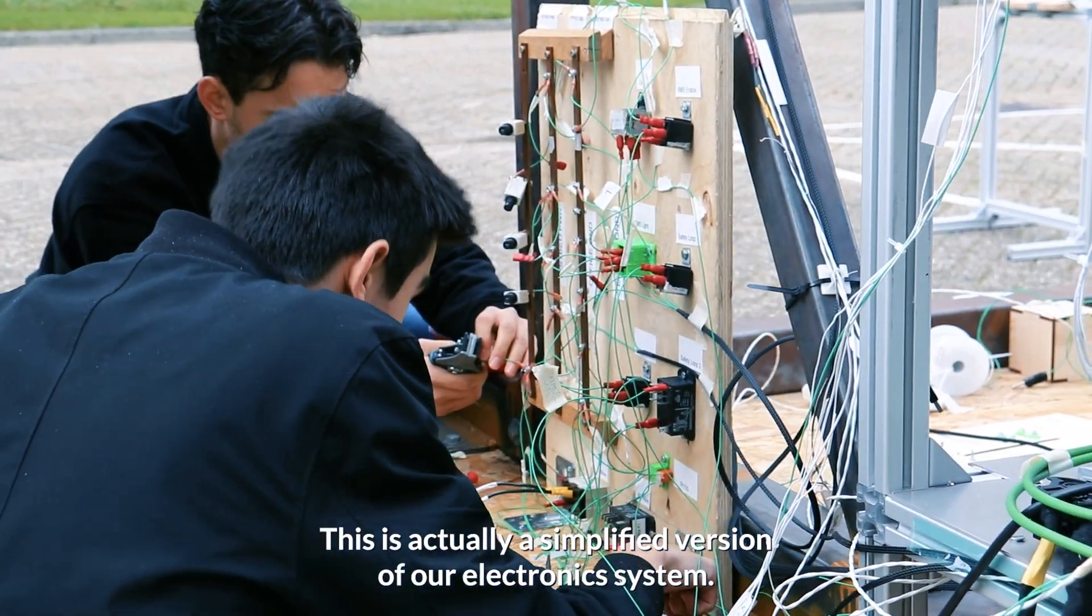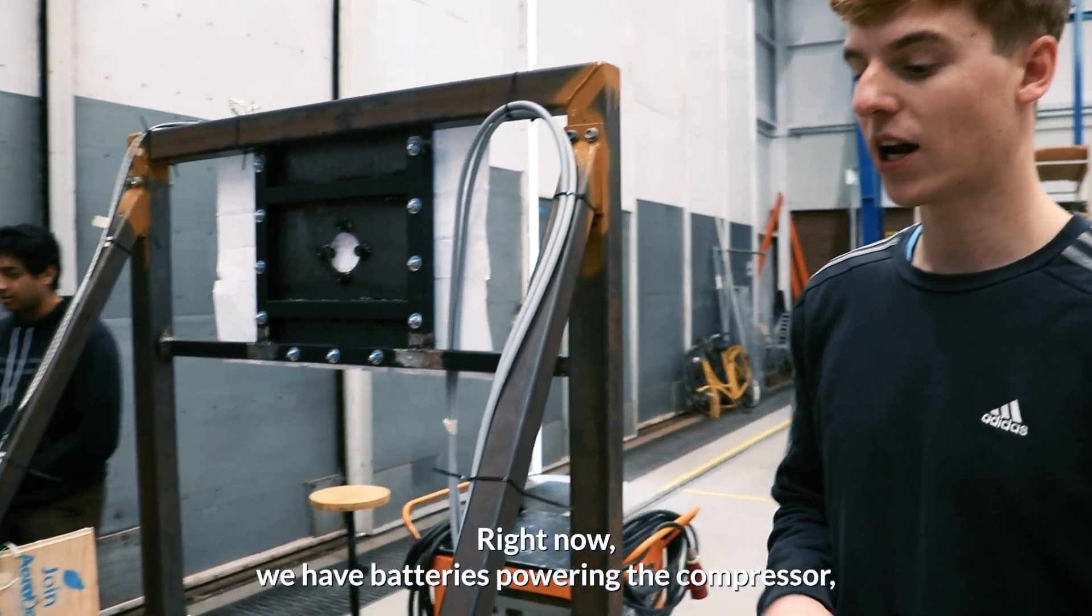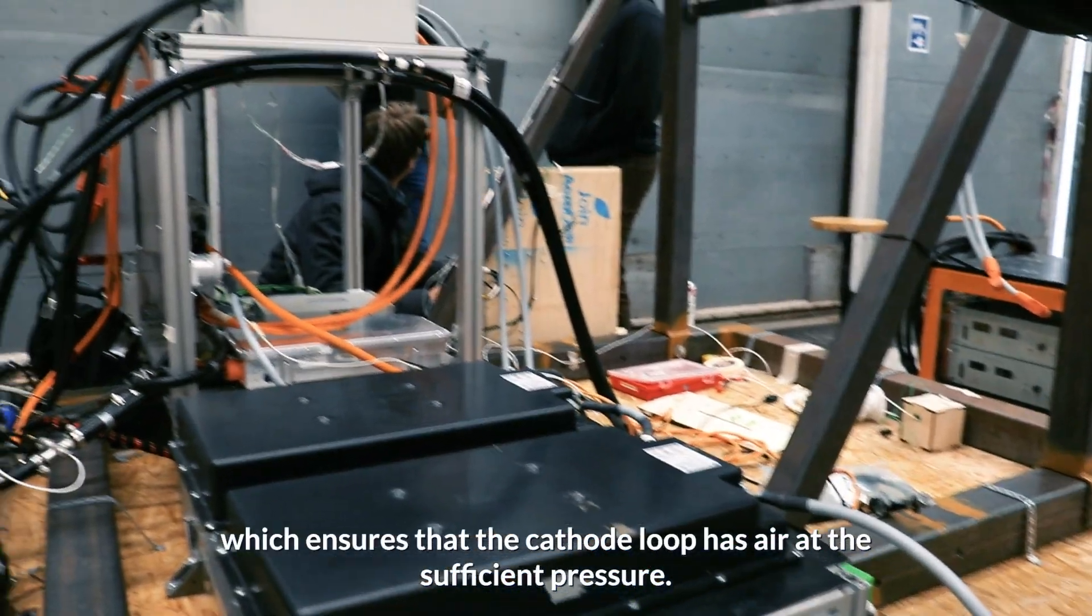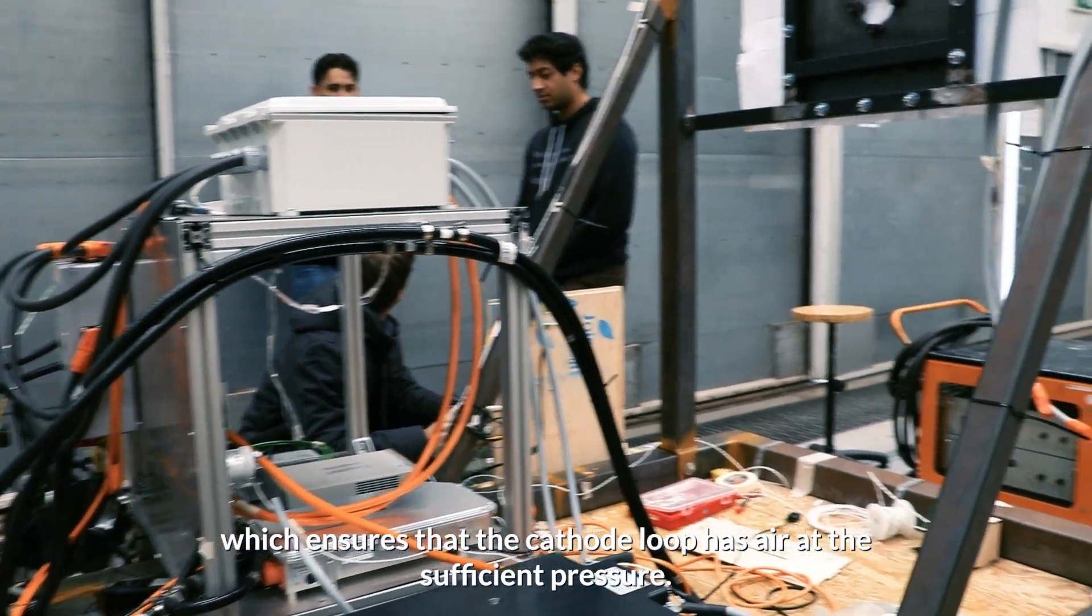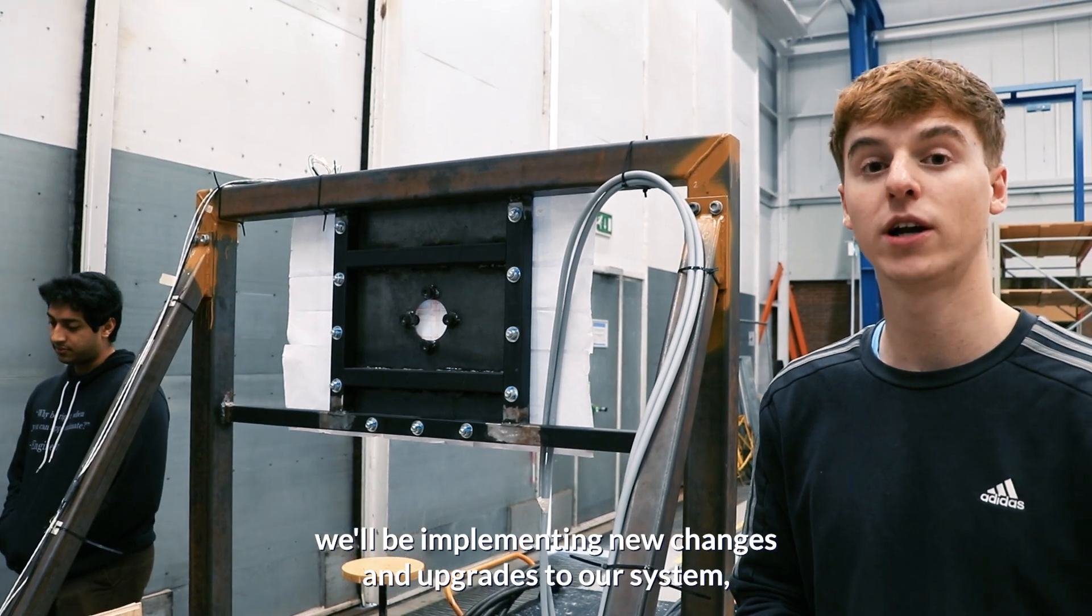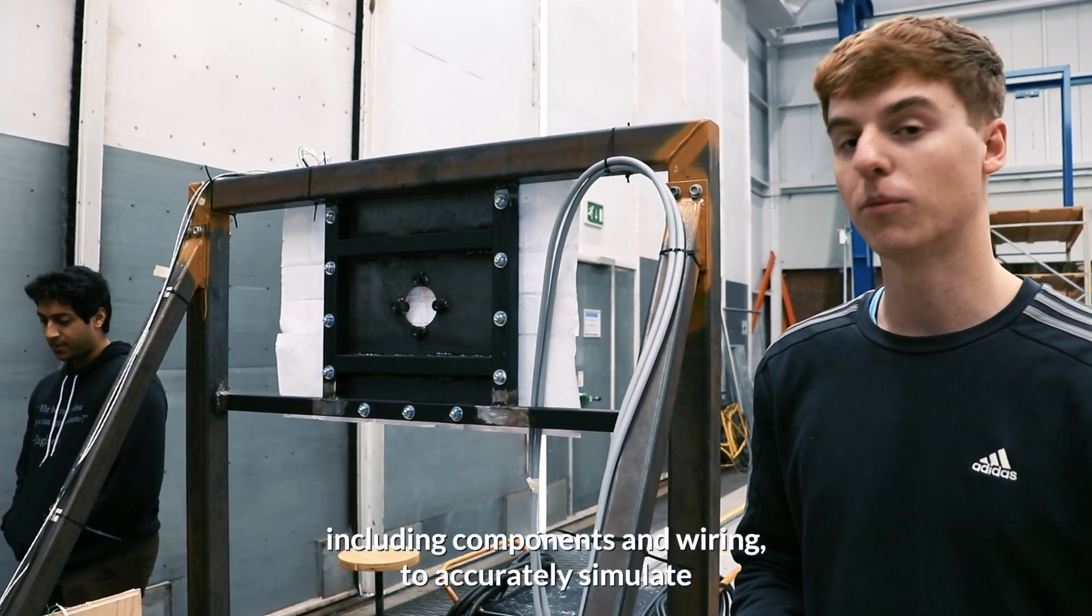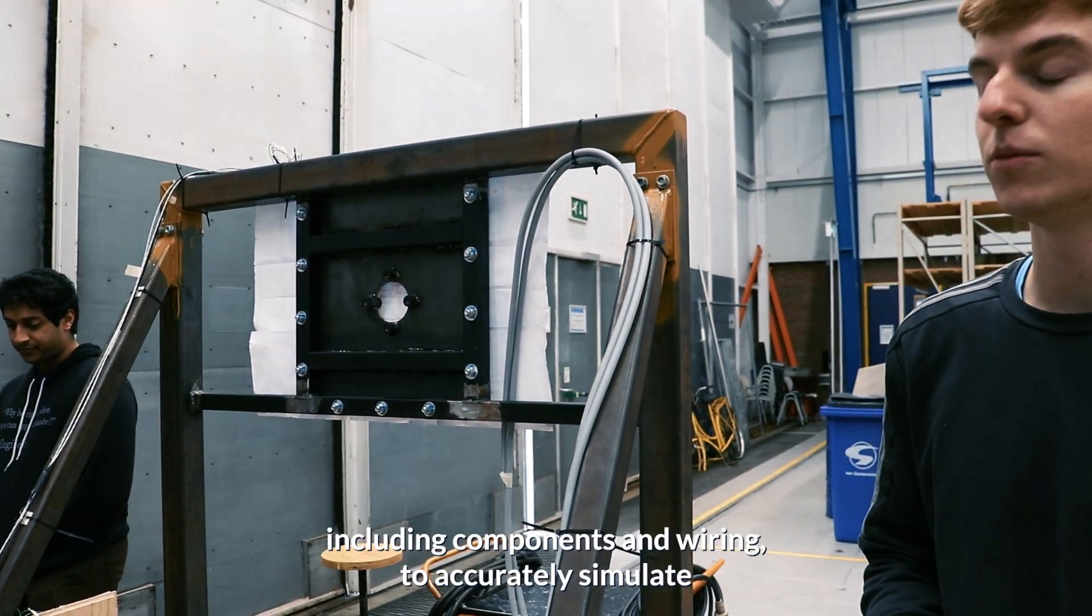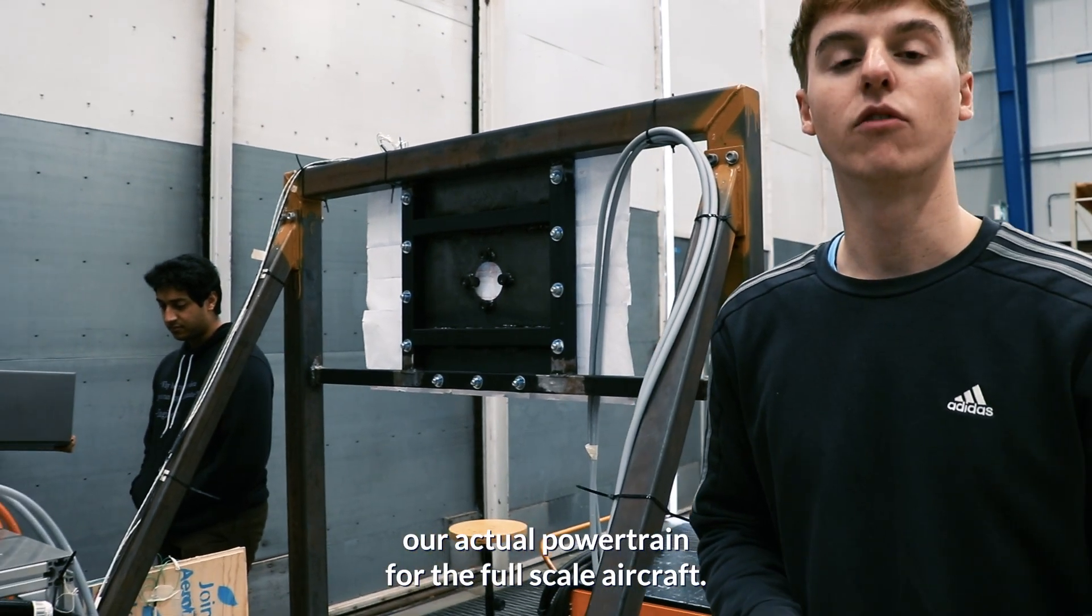This is actually a simplified version of our electronic system. Right now we have batteries powering the compressor, which ensures that the cathode loop has air at the sufficient pressure. Over the coming months, we'll be implementing new changes and upgrades to our system, including components and wiring to accurately simulate our actual powertrain for the full scale aircraft.